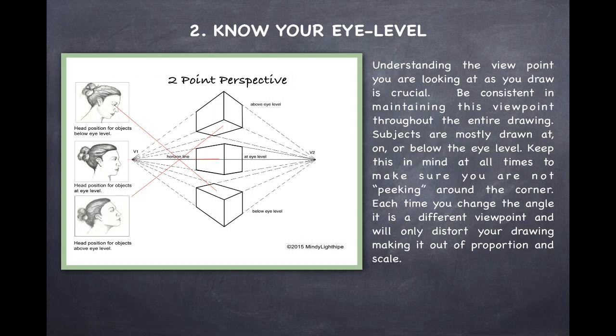Number two, it's really important to know your eye level. Understanding the viewpoint you are looking at as you draw is crucial. Be consistent in maintaining this viewpoint throughout the entire drawing. Subjects are mostly drawn at, on, or below the eye level. Keep this in mind at all times to make sure that you're not peeking around the corner. When you peek around the corner it's a different viewpoint every time and you will only distort your drawing and make it out of proportion and scale.